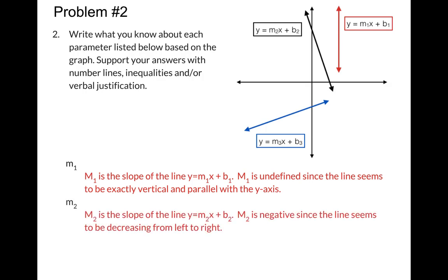m2 is also a slope, but it says the slope of the line y equals m2x plus b2, and m2 we know that it's negative. We know it's negative because it seems to be decreasing from left to right. It's like I'm going, if I'm going from left to right, I'm going downhill.